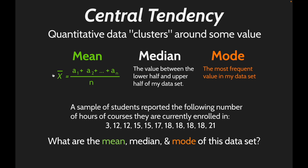There are other ways of expressing central tendency besides the mean. The median is the value between the lower half and upper half of the data set — the exact middle of an ordered sequence of data points. The mode is the most frequent value in the data set.